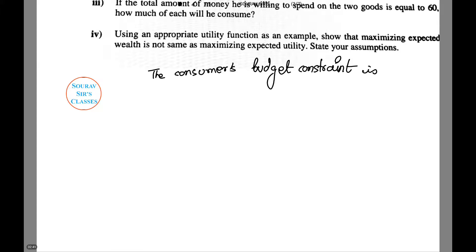Now the consumer's budget constraint is 60 equals 2X plus 6Y. Substituting the relation X equals 2Y, we get 60 equals 10Y, or Y equals 6 and X equals 12.